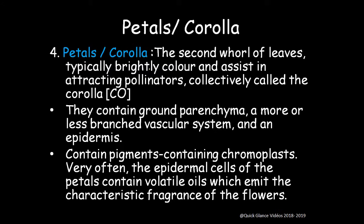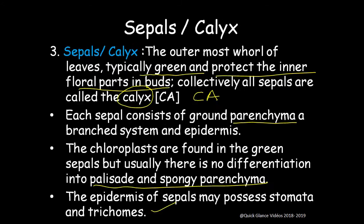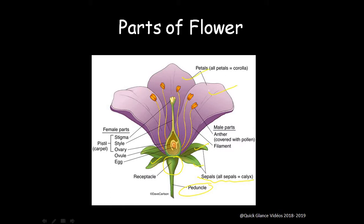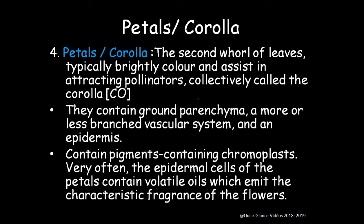Petals or corolla: the second whorl of leaves, typically bright in color, assist in attracting pollinators. Collectively called corolla, with floral formula CO. They contain ground parenchyma, a vascular system, epidermis, pigments, and chromoplasts. The epidermal cells of petals often contain volatile oils, which emit the characteristic fragrance of the flower. This fragrance, along with nectaries, attracts pollinators like bees, which help transfer pollen to the stigma for cross-pollination.